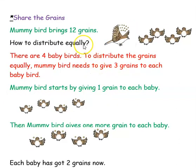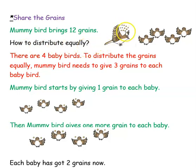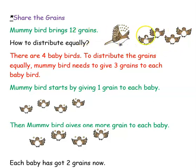Next is a very interesting example about birds and grains — how they share grains with their young ones. Let's see what is given. Mummy bird brings 12 grains. There are 4 baby birds: 1, 2, 3, 4. So it has to give the 12 grains equally to all 4 birds. To distribute the grains equally, mummy bird needs to give 3 grains to each bird.